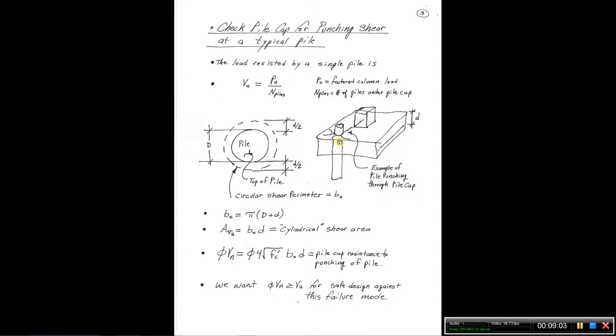If we multiply that times the depth d, little d here, we are going to get a cylindrical area that this pile creates in terms of a failure surface. That gives us our total shear area, A sub vu. That's B0 times d. Then we are in a position to calculate the nominal factored shear resistance to punching shear. We have phi vn is equal to phi times 4 times the square root of F sub c prime times B0 times d. That phi vn needs to be greater than this v sub u value that was being applied to a single pile.